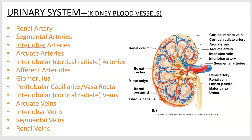These blood vessels go up and back, so they're going to have the same names. The renal artery is this big red structure, which branches into segmental arteries. Interlobar arteries go in between the lobes. Two structures I should mention: renal pyramids are these structures here — that's where the tubes from the nephrons run. In between are renal columns, which are where the blood vessels go.